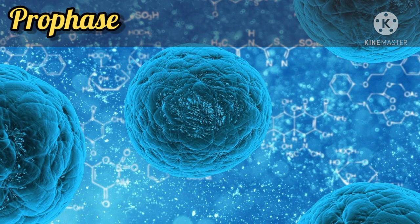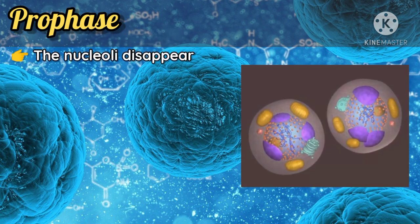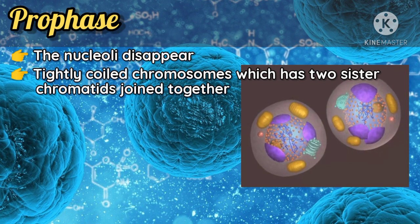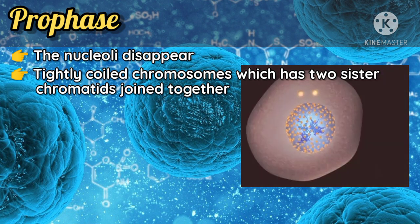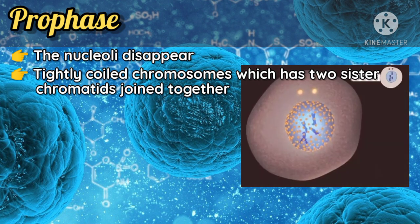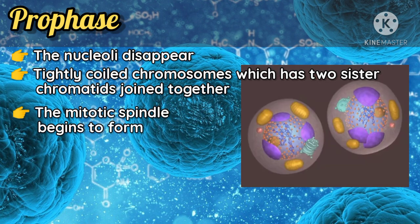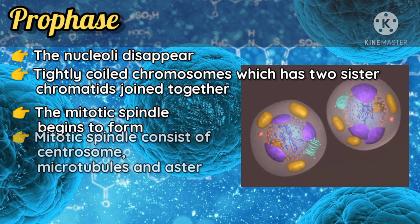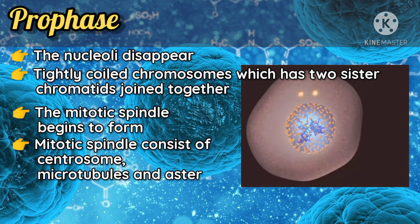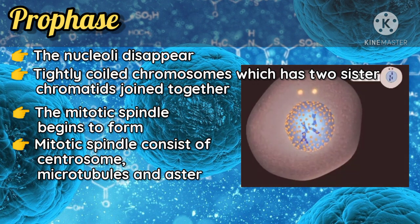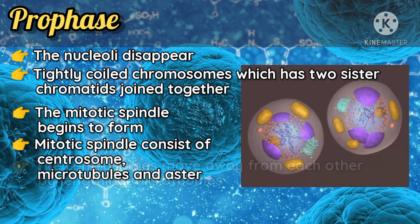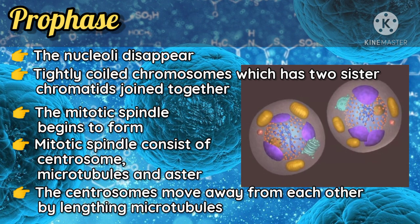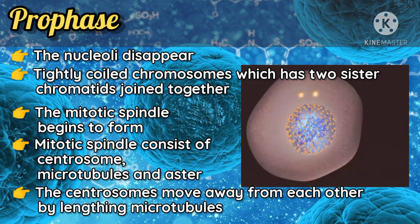In prophase, tightly coiled chromosomes with sister chromatids join together. The mitotic spindle begins to form. It consists of centrosomes, microtubules, and asters. The centrosomes move away from each other by elongating microtubules.